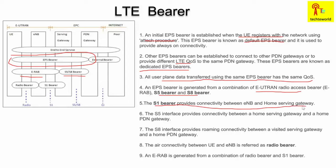The S1 bearer provides connectivity between the eNodeB and the serving gateway. Whatever messages travel between the eNodeB and the serving gateway will use the S1 bearer. Between the serving gateway and PDN gateway, as we know, we have the S5 or S8 interface, and the bearer used there is named accordingly — the S5/S8 bearer.